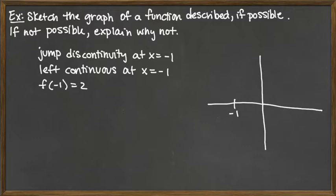Perhaps it would be easiest to plot a point. I'm looking at f of negative 1 equals 2, and plotting that point would be a good starting place. That is one of the requirements, so we definitely need that point negative 1 comma 2 on our graph.